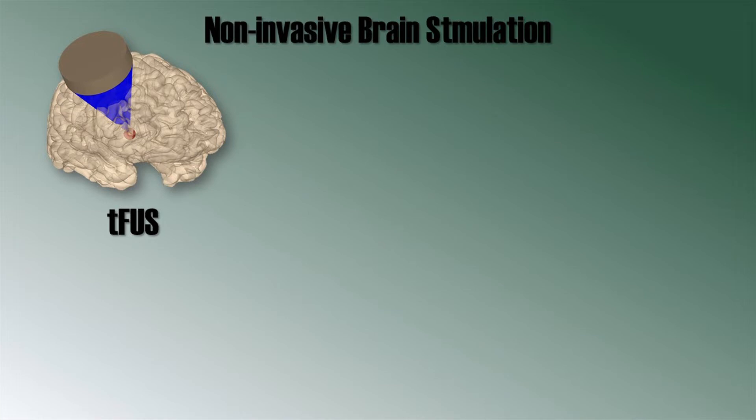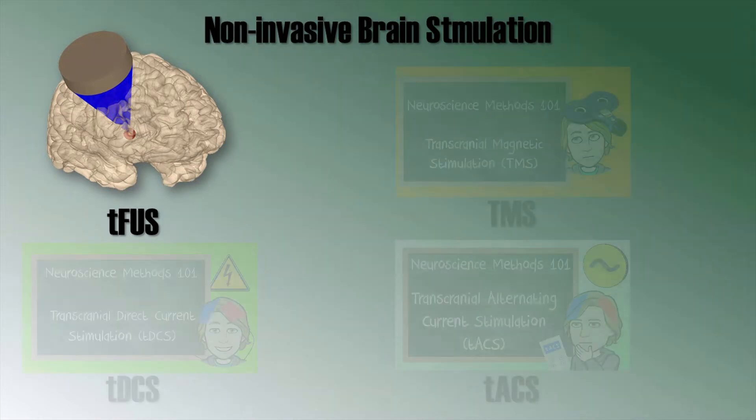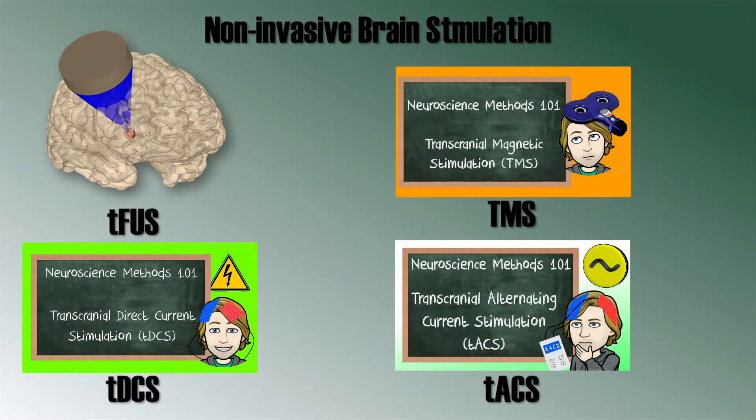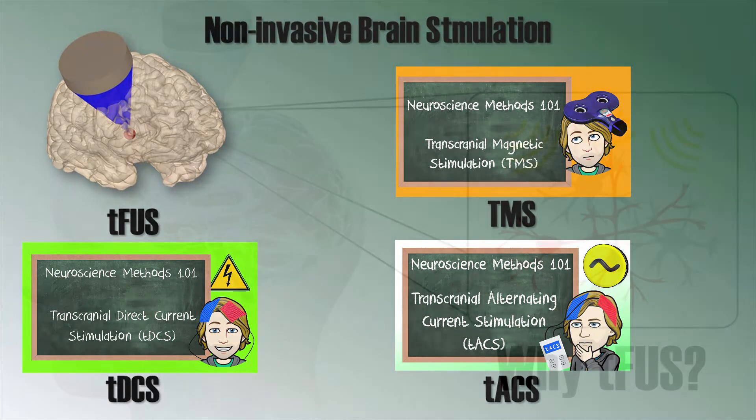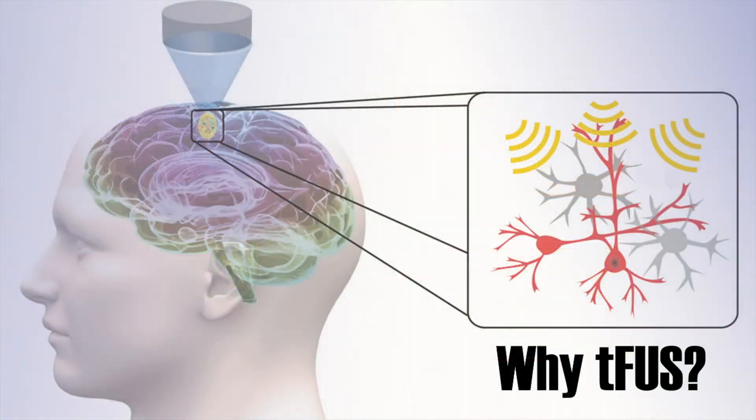Now, non-invasive brain stimulation is nothing new. And on this channel, we talked about transcranial magnetic stimulation, transcranial direct current stimulation, and transcranial alternating current stimulation. So, if we already have methods that use magnetic and electric fields to stimulate the brain, why do we need another one?